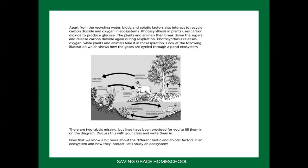Apart from recycling water, biotic and abiotic factors also interact to recycle carbon dioxide and oxygen in ecosystems, as shown in this picture. Carbon dioxide is released during respiration in animals. Then that carbon dioxide is used by the plants in photosynthesis — the plants take in that carbon dioxide and use it to produce oxygen. Then that oxygen is used by the animals for breathing.